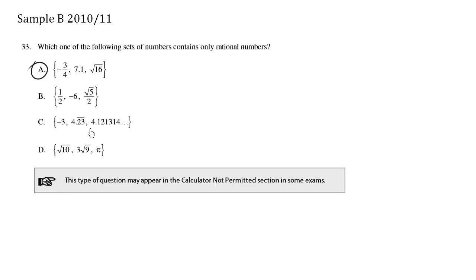Now this here is rational. Now unfortunately here, 4.121314 dot dot dot. There's no real repeating pattern here. So this is irrational, since we don't have a little repeater bar here.